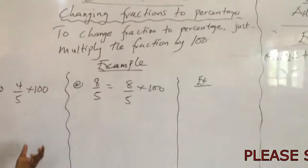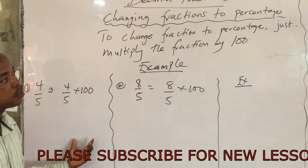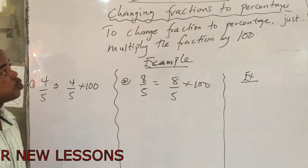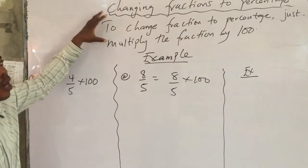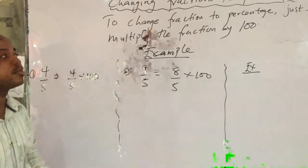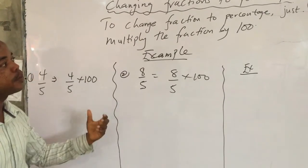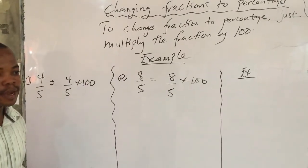Alright, so last time we learned how to change from decimals, from fractions to decimals. Today we are going to learn how to change from fractions to percentages. We all learned that percentage means out of 100, right? Very good.